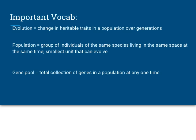Before we get going, there are some vocabulary words you might have seen before in this unit, but I want to review because they're important for this section going forward. First, remember that evolution is whenever we see a change in the heritable traits of a population. A population is a group of individuals of the same species that live in the same space and at the same time, and it's the smallest unit that can evolve.